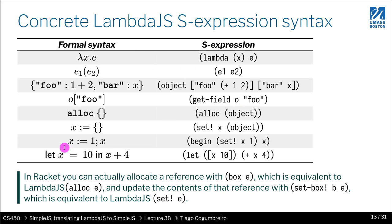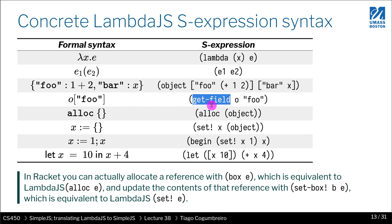Let's look at how we represent the formalism and the concrete syntax. A lambda is written with 'lambda' as you would expect. A function application is called as usual. For an object declaration, we use the syntax: 'object' followed by pairs of key-value items, where the key is a string. To read a field from an object, you use the function 'getField', where the first argument is the object and the second is the string. To allocate, you say 'alloc' and pass whatever object you want to store in the heap.